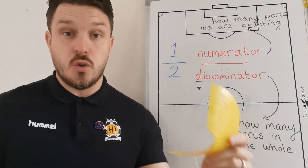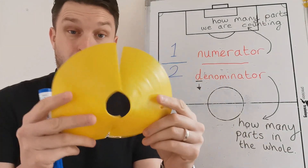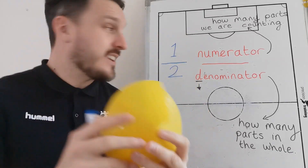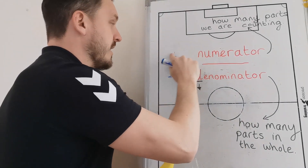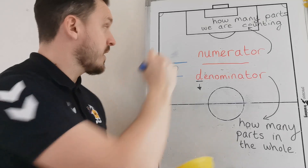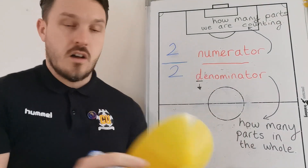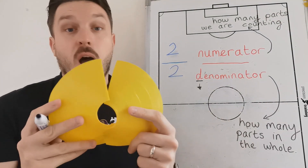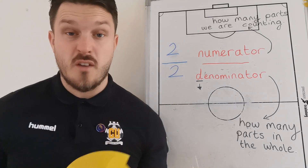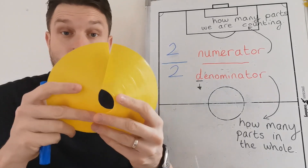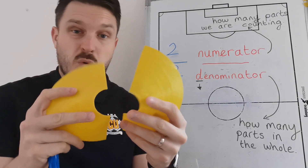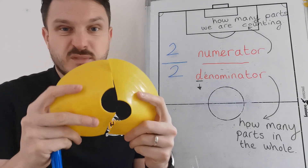If I were to put the two parts together and have them together, then I'd be counting my two parts. And my whole is two, which gives me a fraction of two over two, which is a whole. I've got my whole coming back together. Well, kind of.